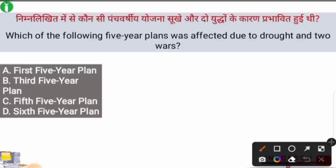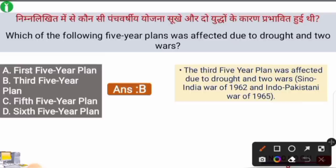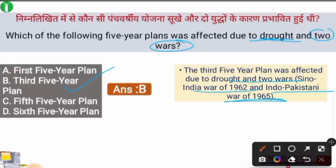Next question: Which Five Year Plan was affected due to drought and two wars? The right answer is option B — the Third Five Year Plan. Our Third Five Year Plan was considered a failure. It failed because of a severe drought and two wars — the Sino-India War of 1962 and the Indo-Pakistani War of 1965 — both of which deeply impacted the country's economy and planning.